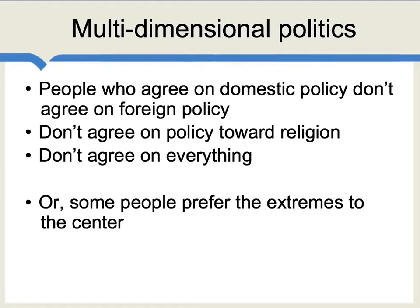Another concrete example that can give rise to multi-dimensional politics is when you have people who prefer the extremes to the center position. For instance, in the case of foreign policy, an individual might favor an all-out war with some other country, or they might favor no war at all, but they might be skeptical about a limited intervention. That would be an example of preferring either extreme to the position in the center.